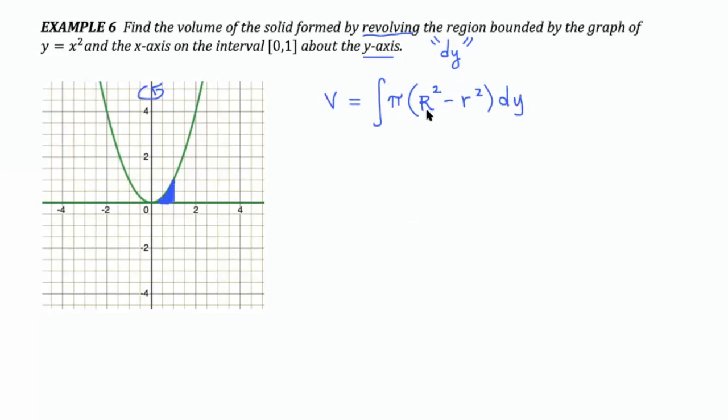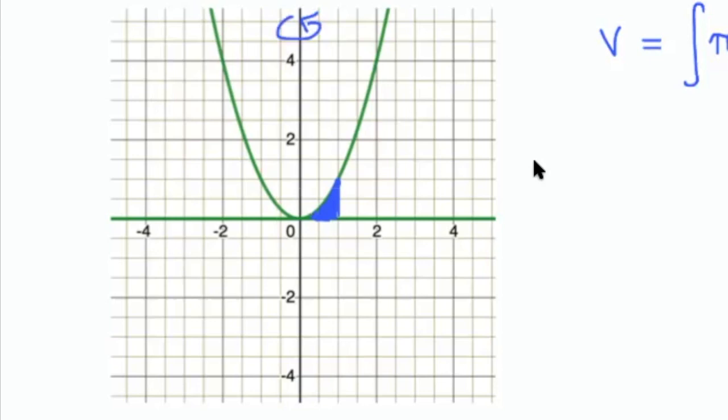So I need to get r, capital R, and little r in terms of y for this integral. To find capital R, we're going to go from our axis of revolution to the furthest out point on our shaded region, which would be here. So that distance represents my capital R.